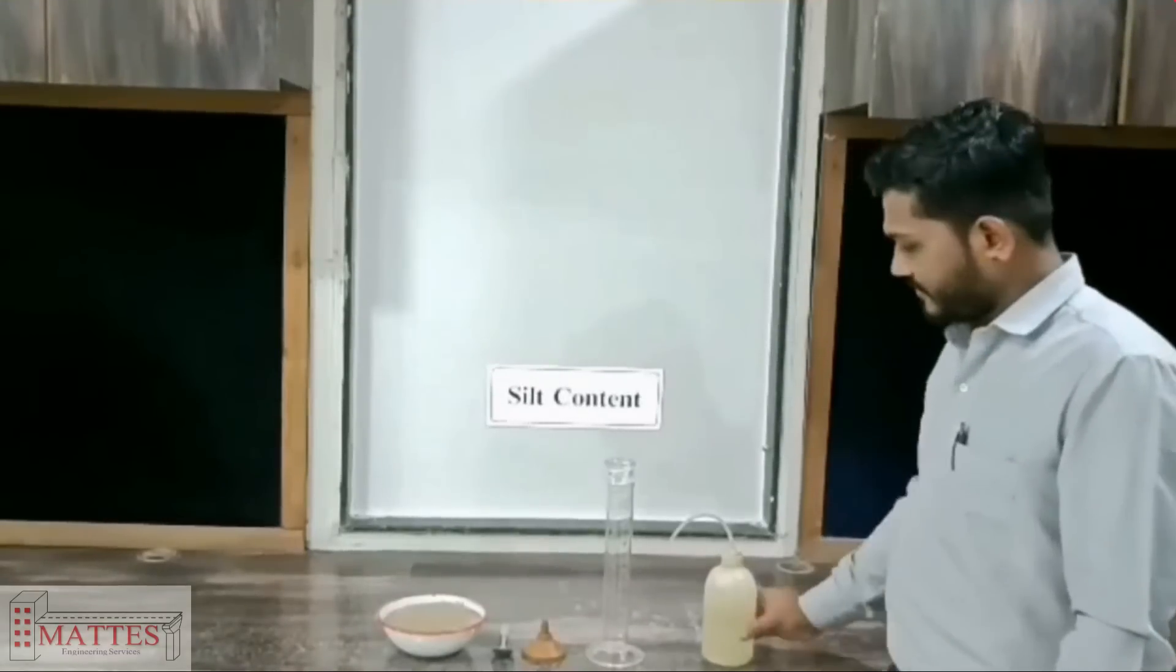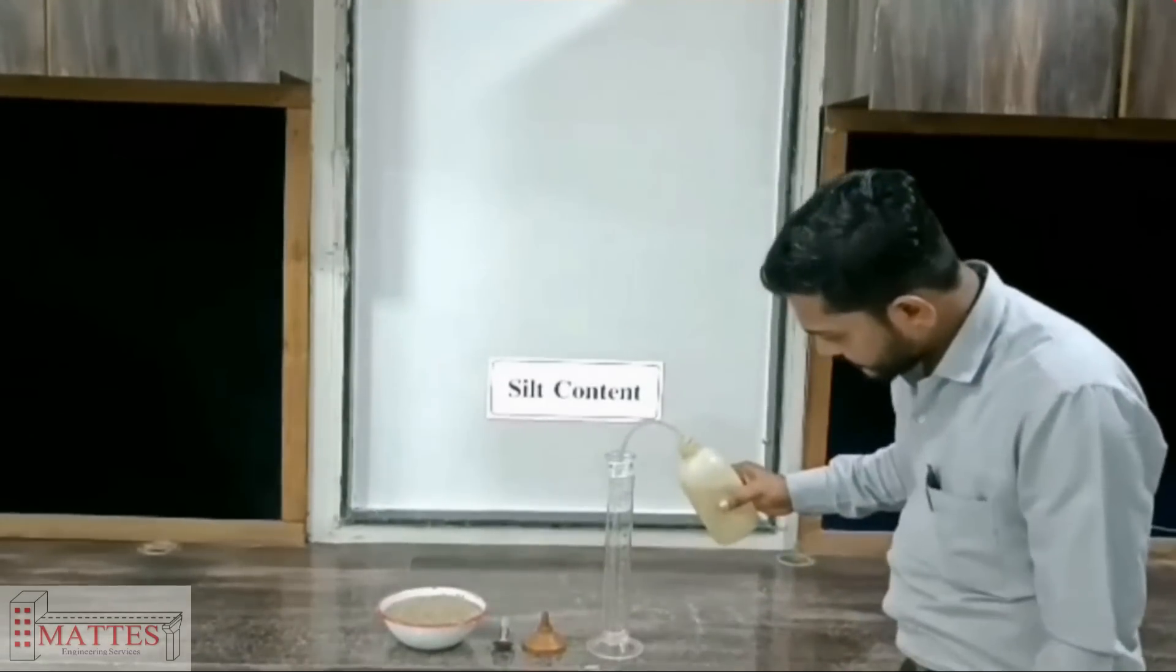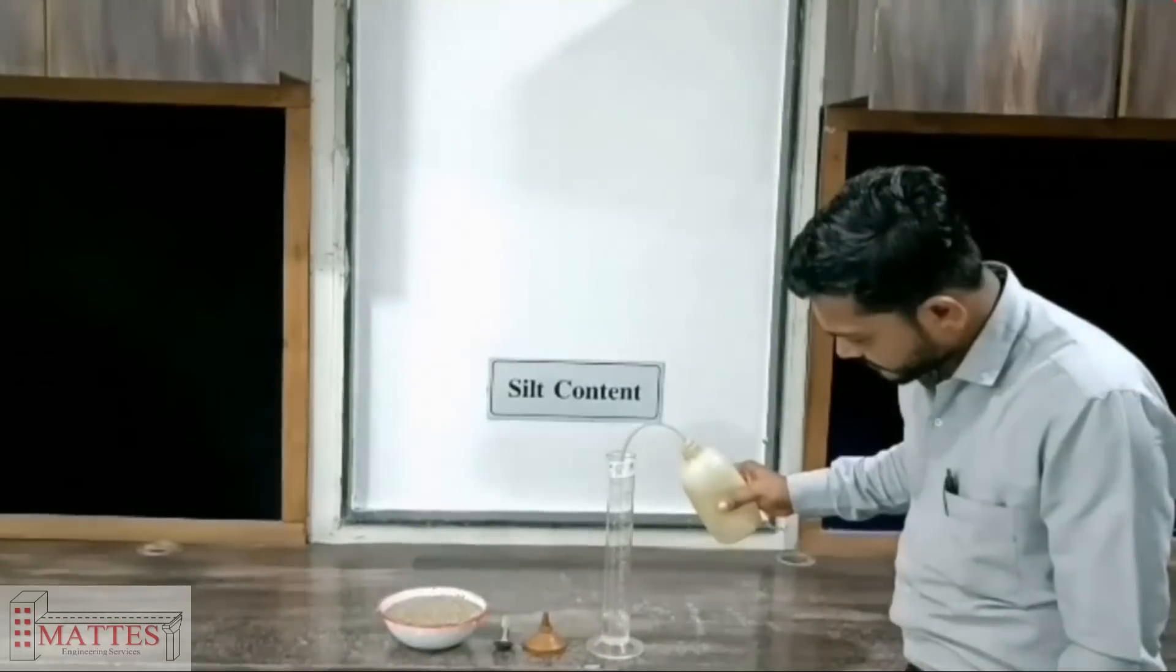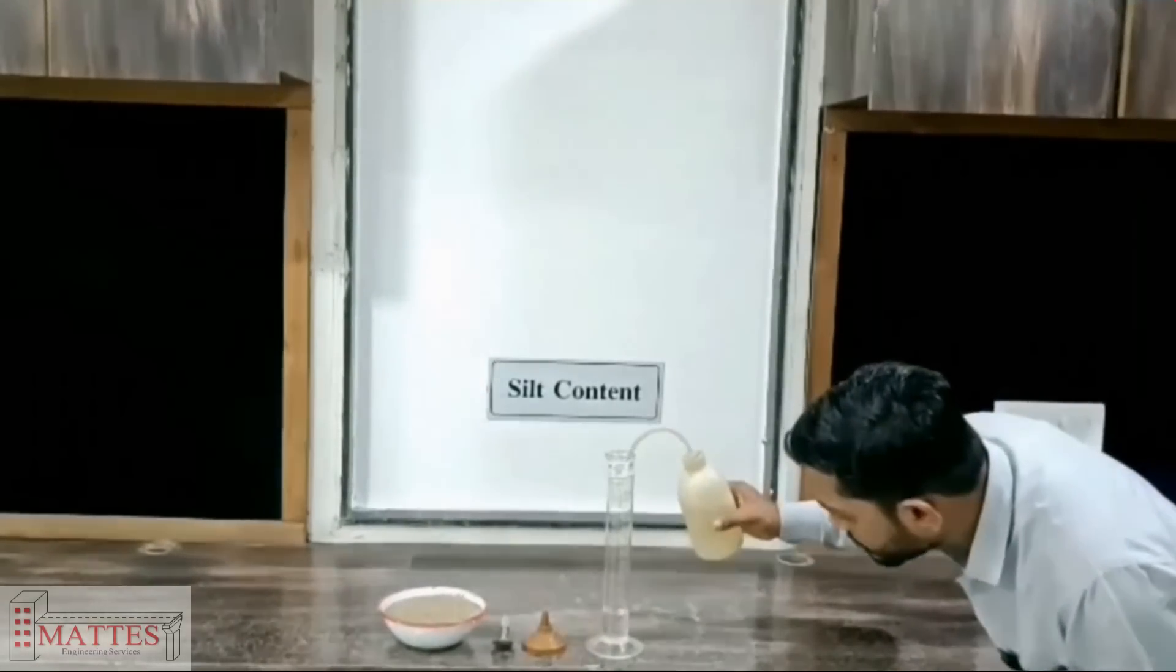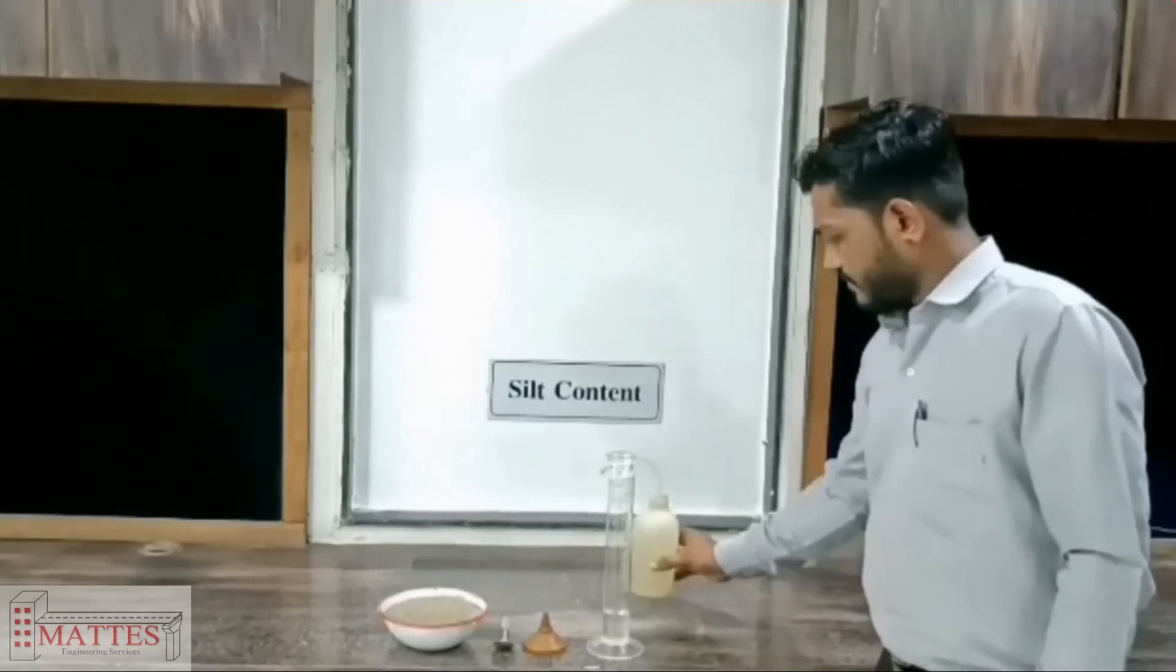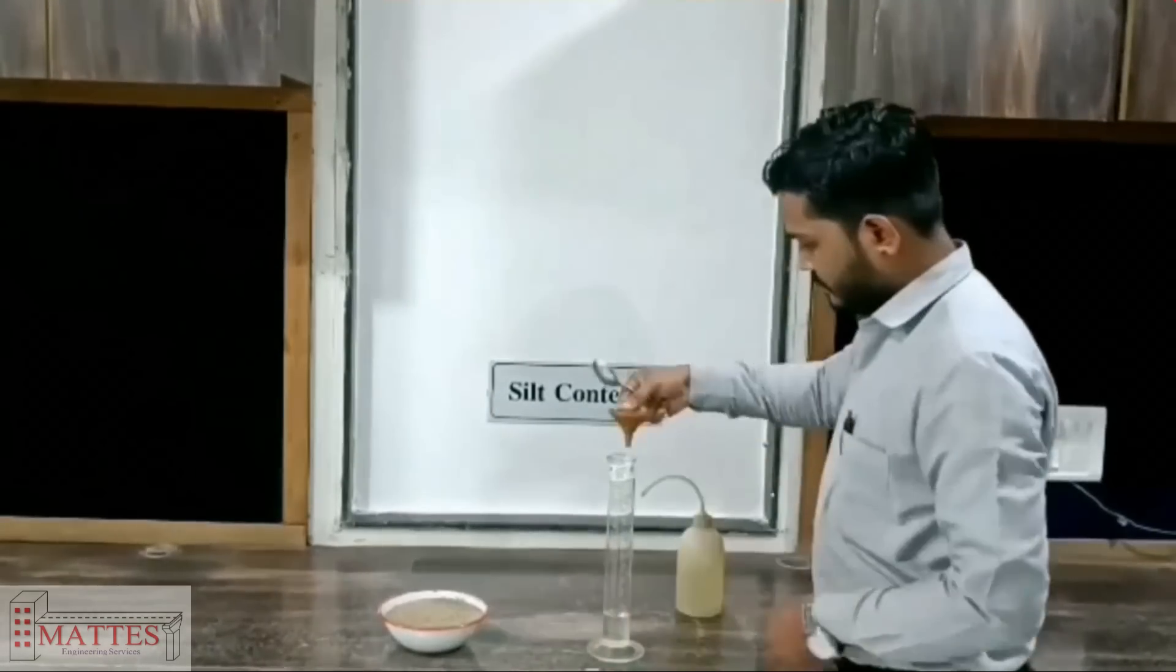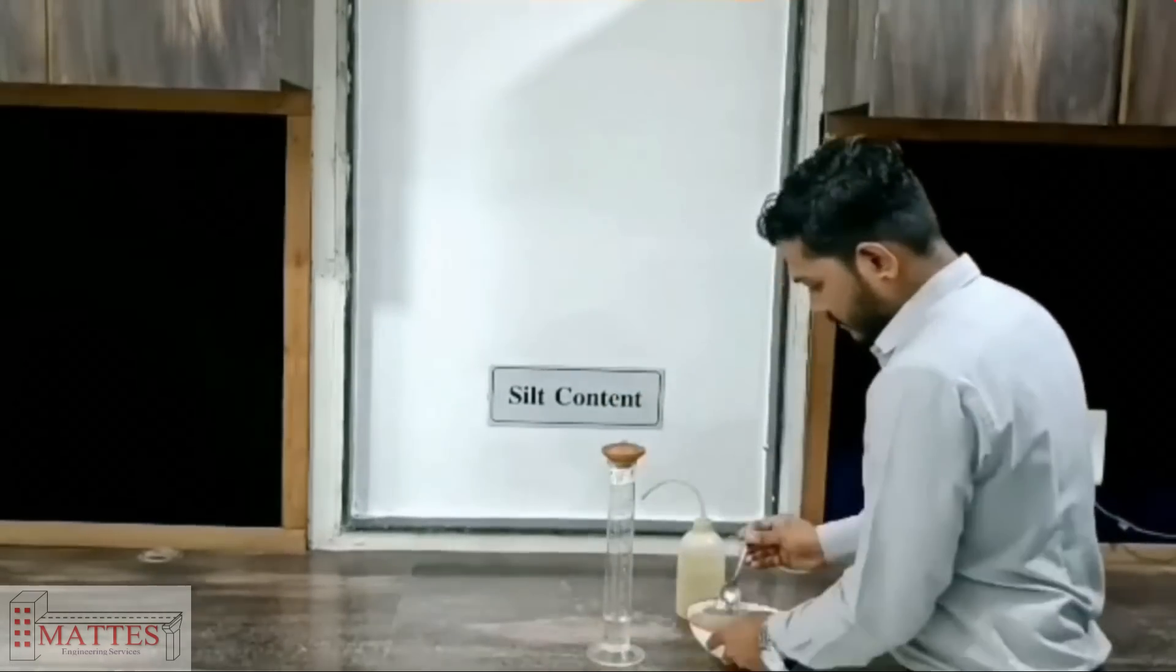To start the experiment, take 50 ml of prepared 1% solution of sodium chloride in a glass cylinder. Add sand to it until its level reaches 100 ml mark.